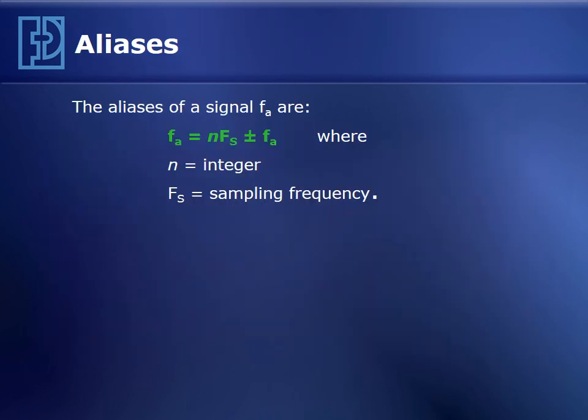More generally, the aliases of a signal — we'll call F sub A — are equal to N times the sampling frequency F sub S, plus or minus F_A, where N is an integer and F_S is the sampling frequency.